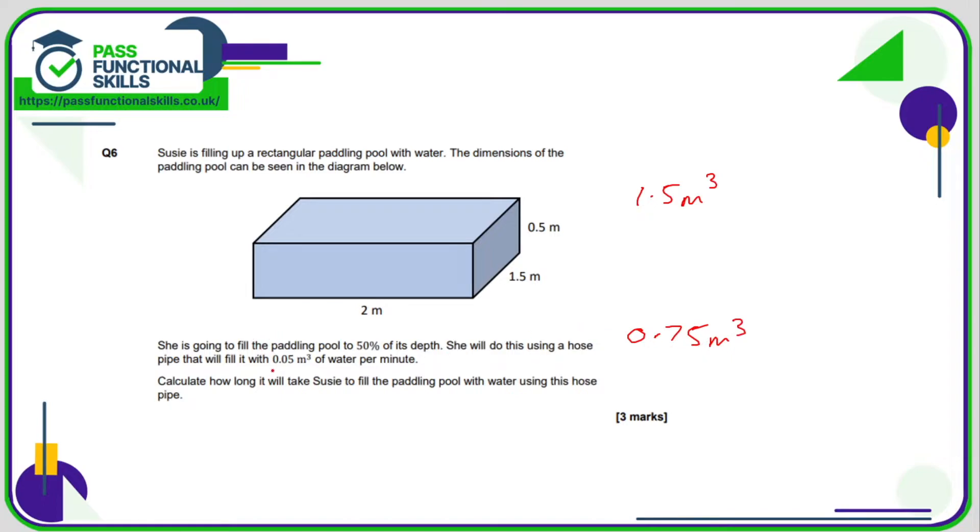She's using a hose pipe that's going to fill it with 0.05 cubic meters per minute. So how many minutes will it take to fill it to 0.75? In other words, what is 0.75 divided by 0.05? And the answer to that is 15, so therefore it's going to take her 15 minutes to fill it to 50% of its depth.